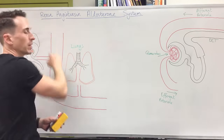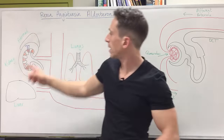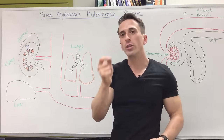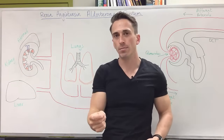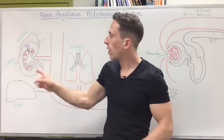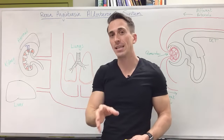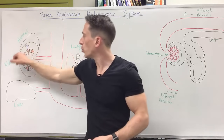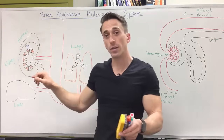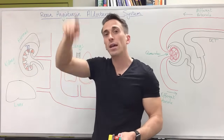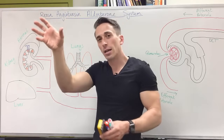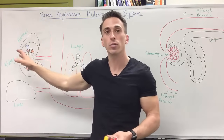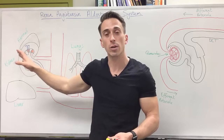The first thing we need to talk about is renin. If you take the kidneys, the filtration system is called the nephron and there are about one million nephrons per kidney. The majority of the nephron sits in the cortex of the kidney, but the loop of Henle and the collecting ducts sit within the renal pyramids, also known as the medullary pyramids.